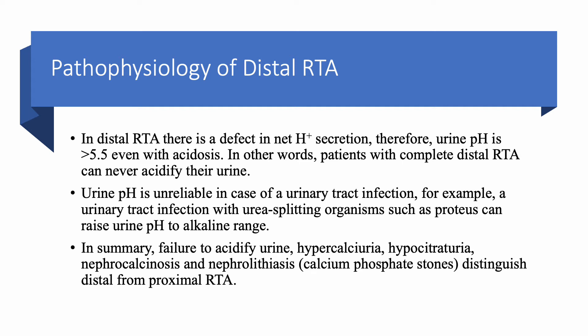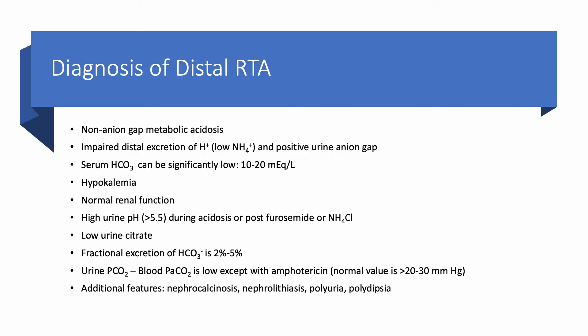Nephrocalcinosis and nephrolithiasis are characteristic. These stones are usually calcium phosphate. The most common kidney stones overall are calcium oxalate, so when you see calcium phosphate stones, think of two things: distal RTA or primary hyperparathyroidism. All these features distinguish distal from proximal RTA. In proximal RTA, the patient can acidify the urine, there is no ammonium problem, the issue is bicarbonate reabsorption, and there is no hypercalciuria, no low urine citrate, and no nephrocalcinosis or nephrolithiasis.